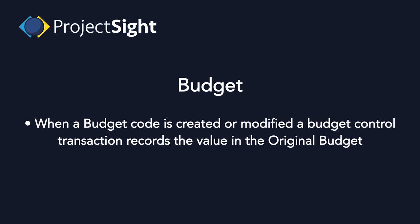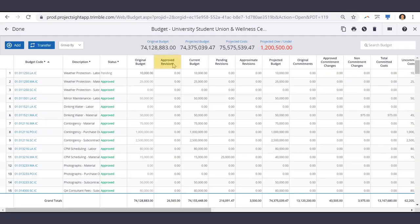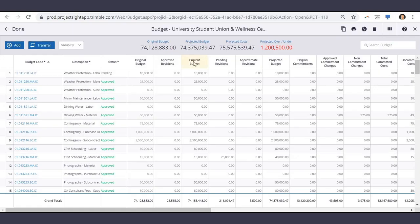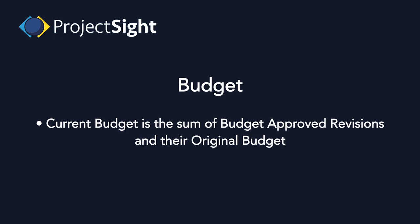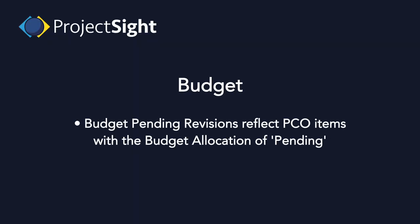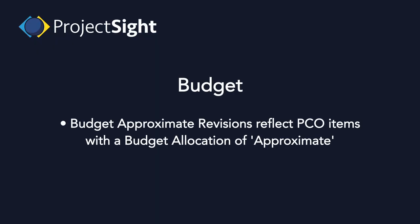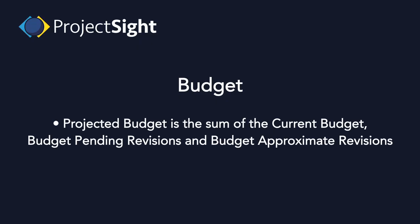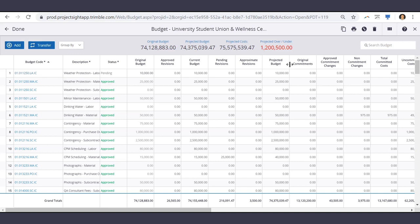Now let's review the budget columns. Starting with the original budget: when a budget code is created or modified, a budget control transaction records the value. Budget approved revisions reflect PCO items with a budget allocation of approved. The current budget is the sum of budget approved revisions and the original budget. Budget pending revisions reflect PCO items with a budget allocation of pending. Budget approximate revisions reflect PCO items with a budget allocation of approximate. Projected budget is the sum of the current budget, budget pending revisions, and budget approximate revisions.